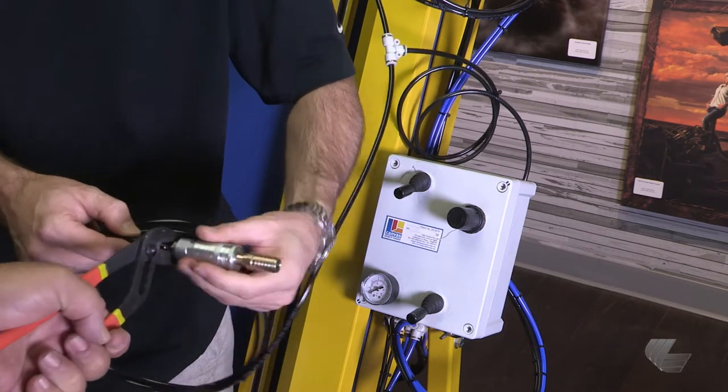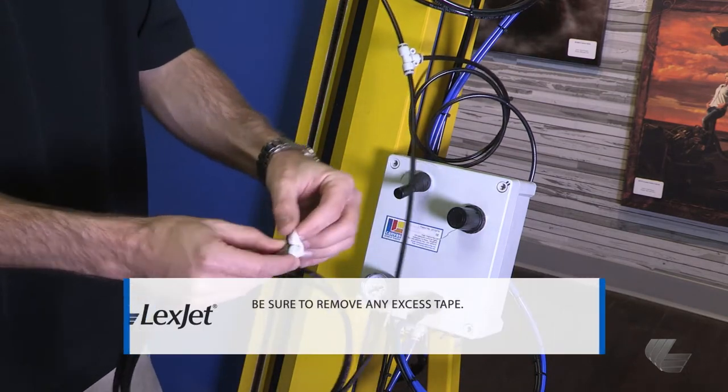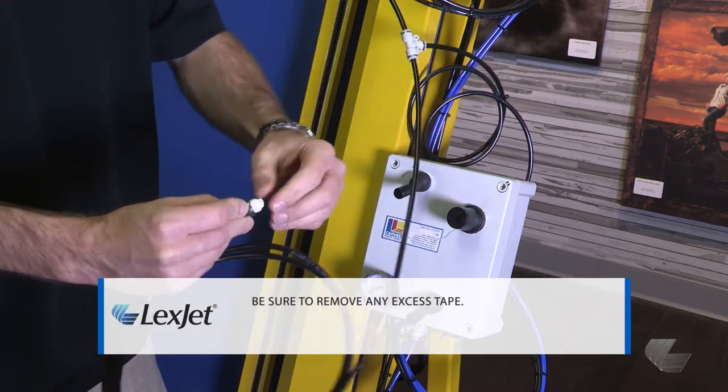Begin by removing the compressor fittings. Apply Teflon tape to the end of the fitting. This will help seal it.